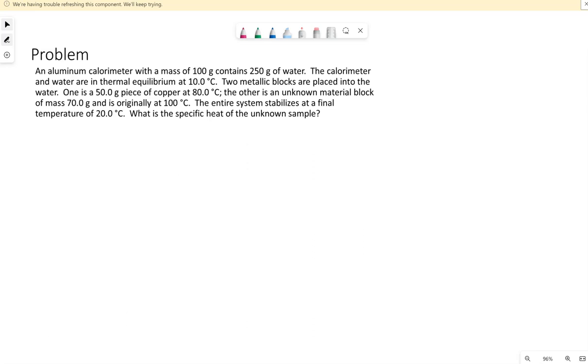We have an aluminum calorimeter with a mass of 100 grams containing 250 grams of water. The calorimeter and water are in thermal equilibrium at 10 degrees Celsius. Two metallic blocks are placed into the water. One is a 50 gram piece of copper at 80 degrees Celsius. The other is an unknown material block of mass 70 grams originally at 100 degrees Celsius. The entire system stabilizes at a final temperature of 20 degrees Celsius. What is the specific heat of the unknown sample?